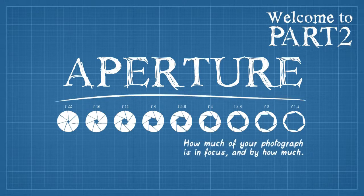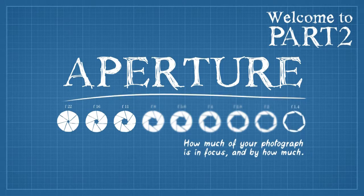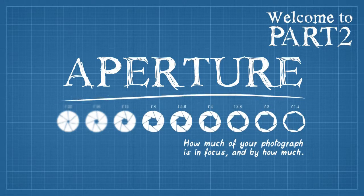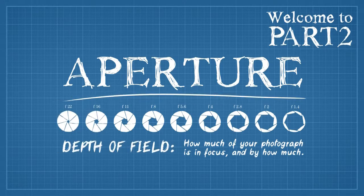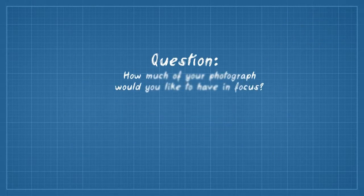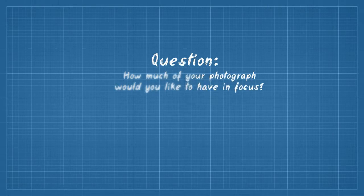Simply put, aperture determines how much of your photo is in focus and how much is out of focus and also by how much. Photographers call this concept depth of field. The question is, how much of your photograph would you like to have in focus?